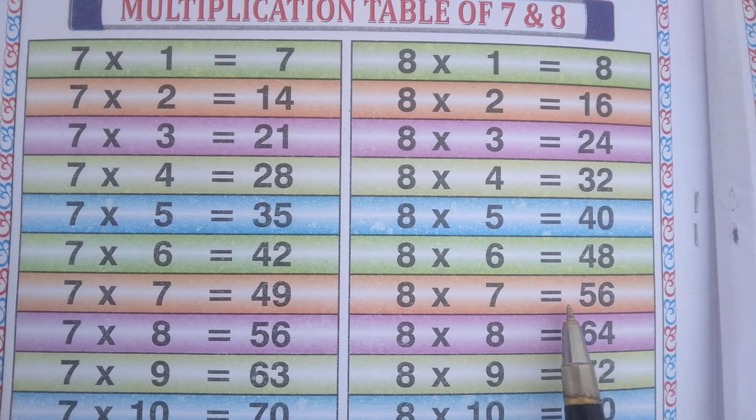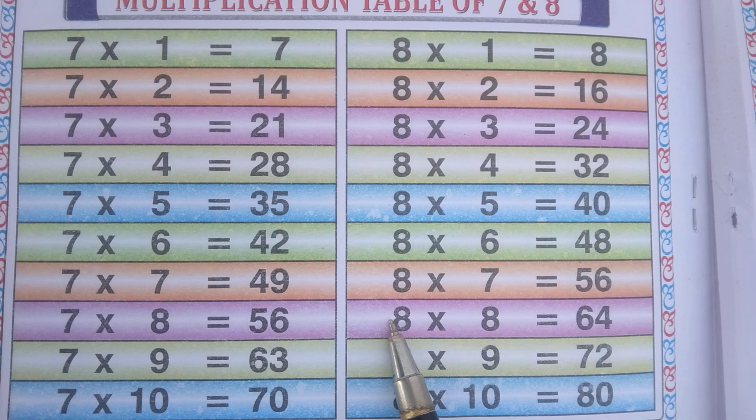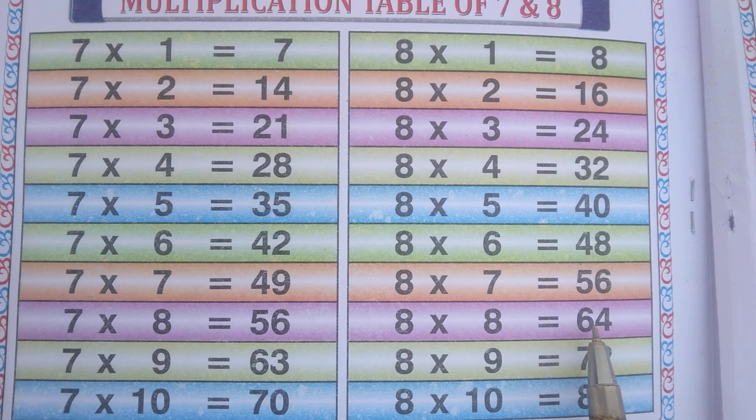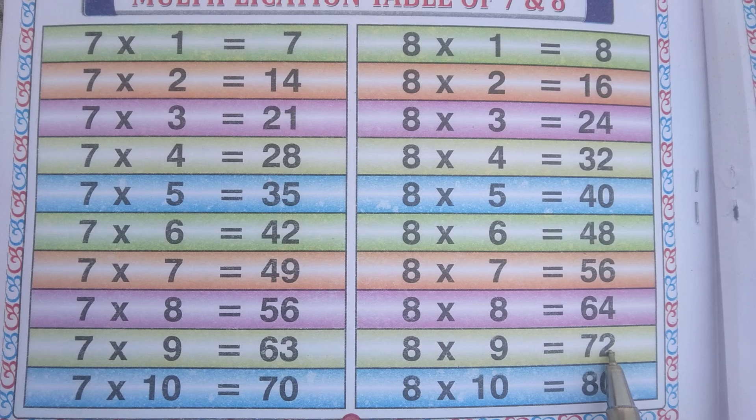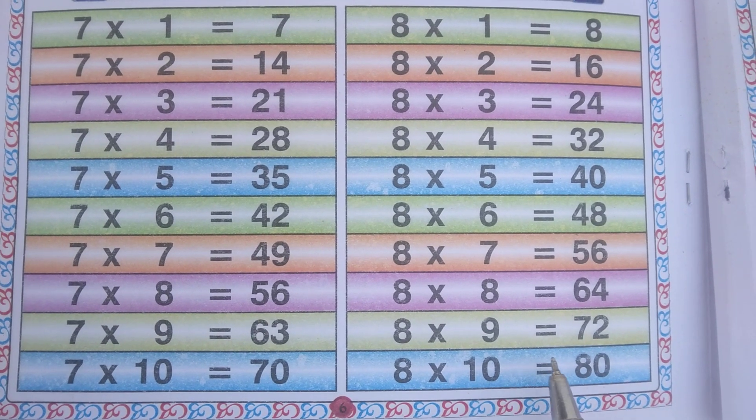8 7s are 56, 8 8s are 64, 8 9s are 72, 8 10s are 80.